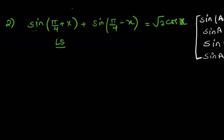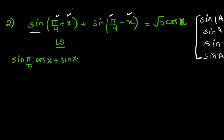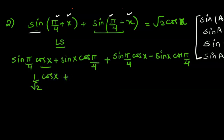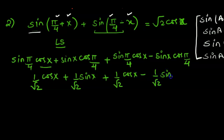We use these two compound angle formulas because the left side involves a combination of two different angles. Expanding sine of pi by 4 plus x gives sine pi by 4 times cos x plus sin x times cos pi by 4. Expanding sine of pi by 4 minus x gives sine pi by 4 times cos x minus sin x times cos pi by 4. From the special triangles, sine pi by 4 equals 1 over root 2 and cos pi by 4 equals 1 over root 2.